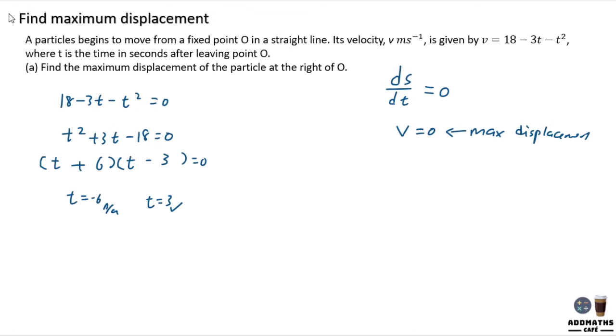To find maximum displacement, you are required to integrate velocity. Let me write down the formula for integrating velocity. By applying v, which is this equation, you are trying to find the displacement. By integrating it, you will have power of 2 divided by 2, power of 3 divided by 3. Always remember to plus c at the end.